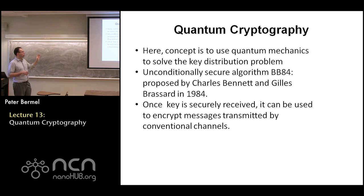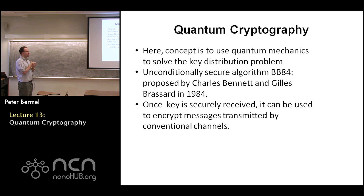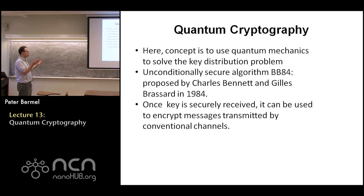The concept is to use quantum mechanics to solve key distribution instead of classical algorithms that can be hacked. This was actually studied decades ago, in 1984 — believe it or not. At the time it was very hard to implement, but at least theoretically it was proposed by Bennett and Brassard. The concept is a quantum mechanical way of exchanging keys, so basically you have a secure set of keys at the sender and receiver. These can also be one-time keys, so even if they do get cracked — which is very hard — they can just be reformed. Then you can encrypt messages using conventional channels, so you don't need a huge amount of quantum exchange for information at this stage.